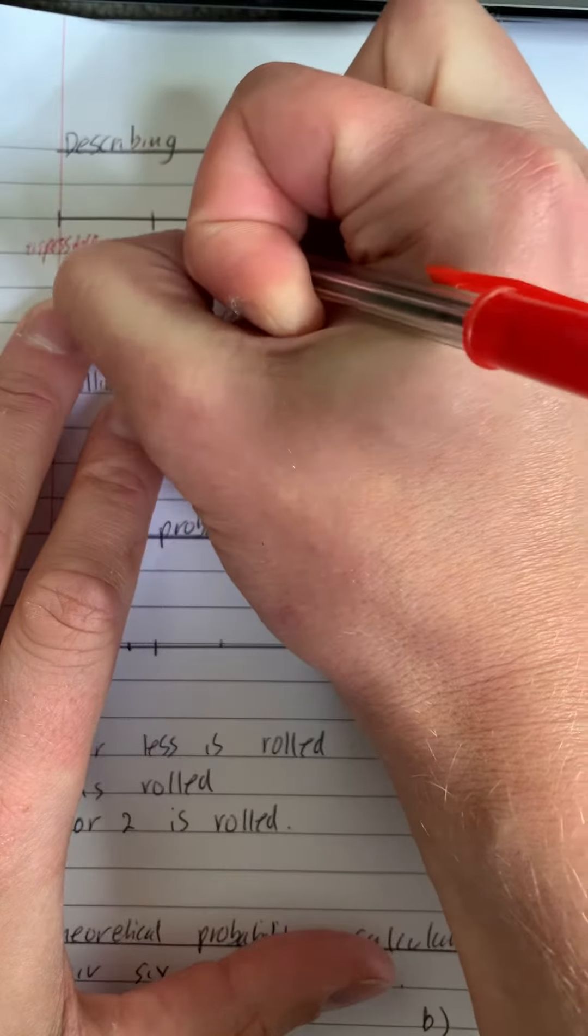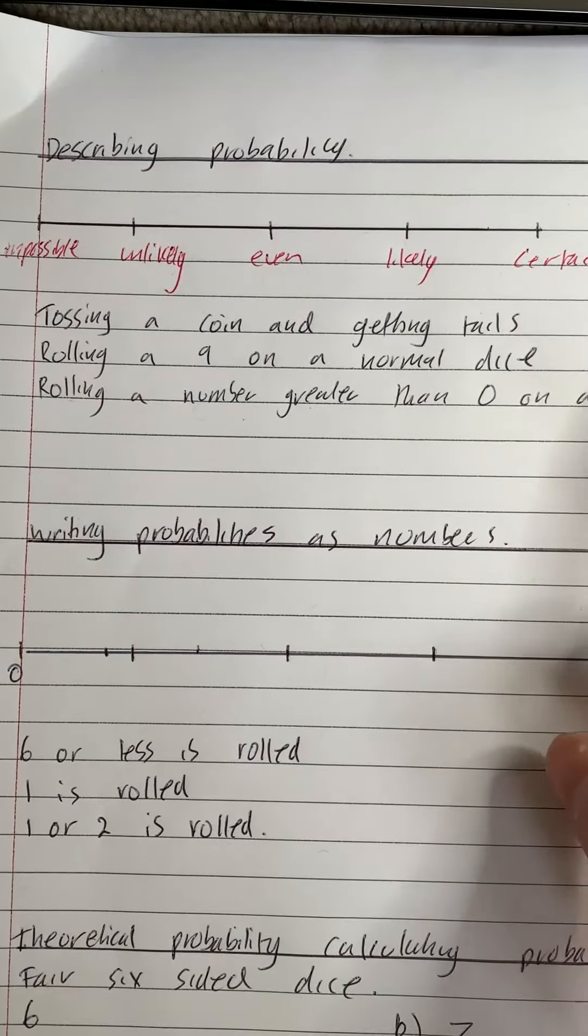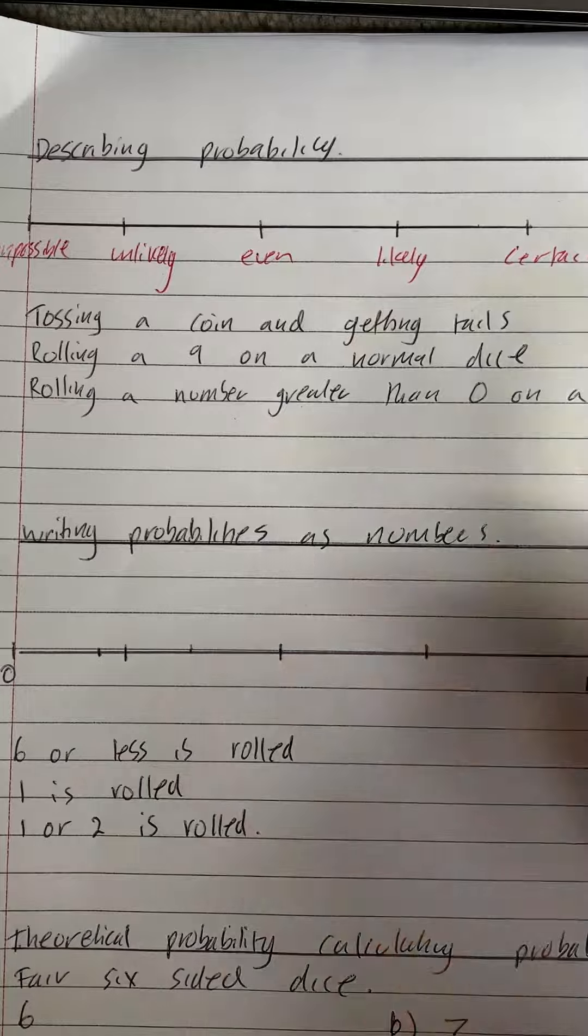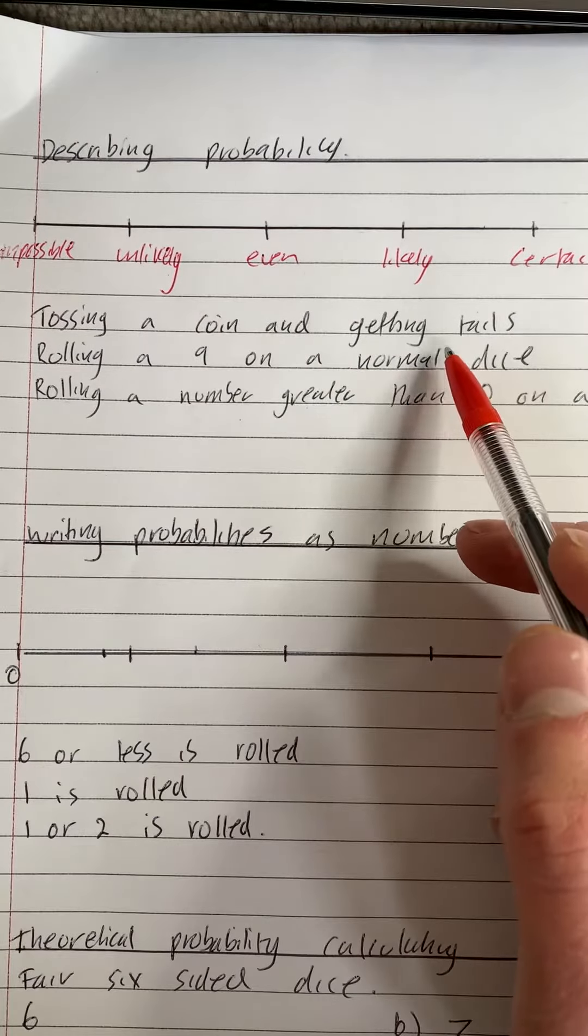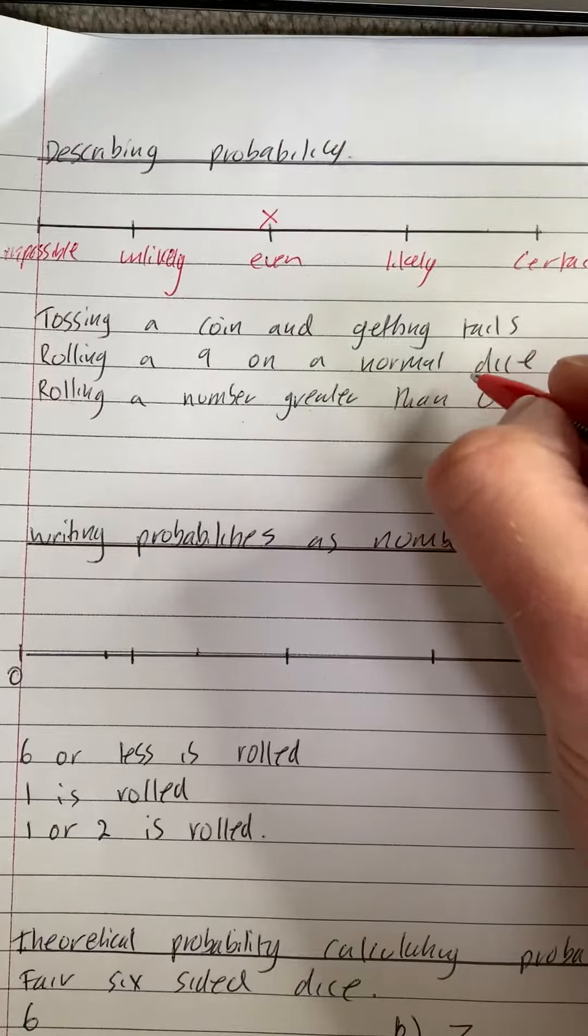Now this is normally from primary school or very early on. Probability questions. It says tossing a coin and getting tails. Now that is going to be even because you've only got one or two chances.